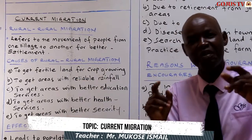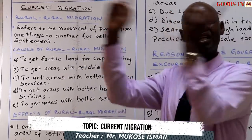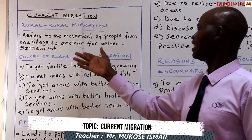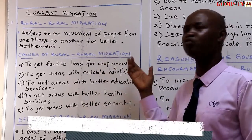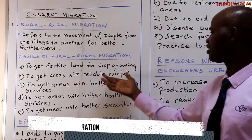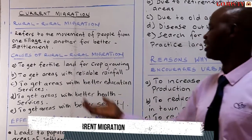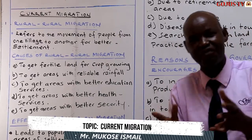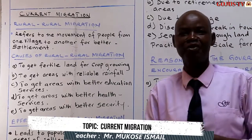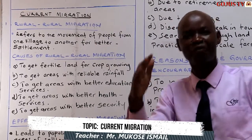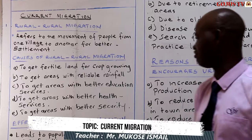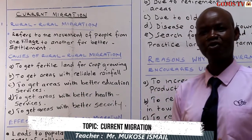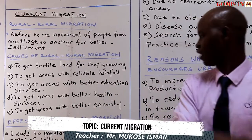There are reasons as to why people are leaving village A to go to village B. Reason number one: farmers are looking for fertile lands to grow crops, areas with reliable rainfall, areas with better education services. You find that people leave villages and come to other villages — for example, here in Chikadzi, people left Butambala to come here to look for better education services and to get areas with better health services.